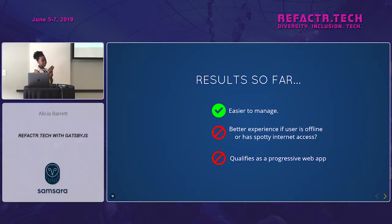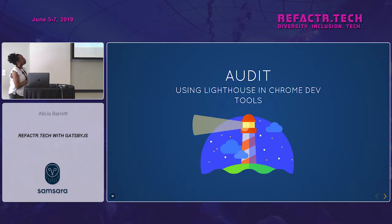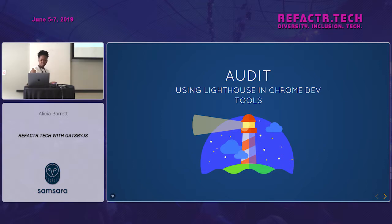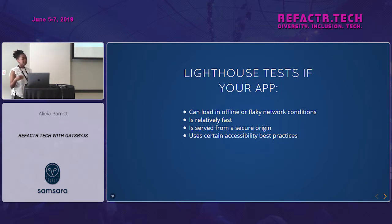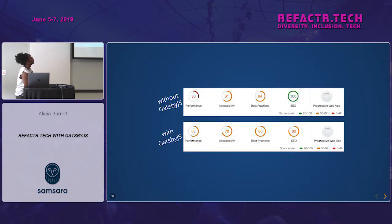But we weren't done yet. The project is easier to manage, but we don't know if we've got a better experience for users on spotty internet, or if this qualifies as a progressive web app. There's a way to find out: we can run an audit using a tool in Chrome DevTools called Lighthouse, which tests your app and gives you a grade on those criteria.